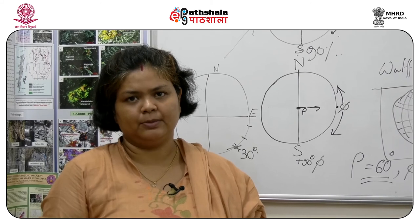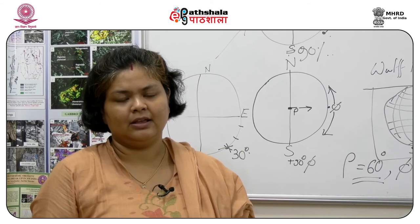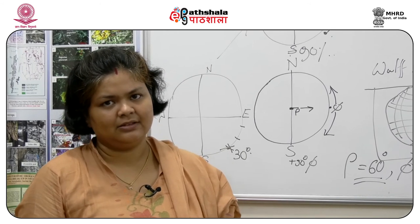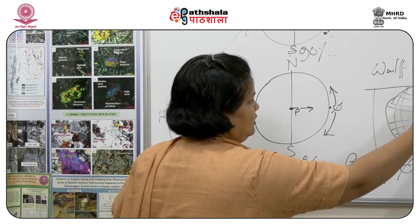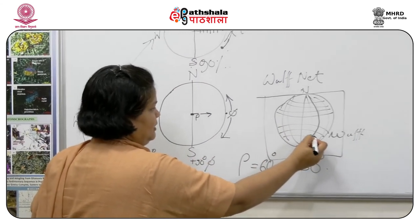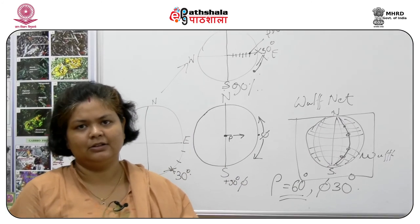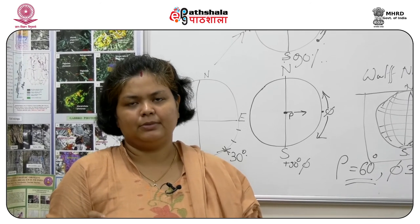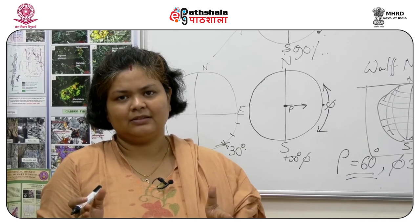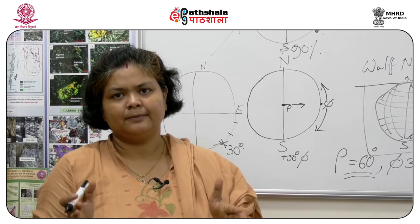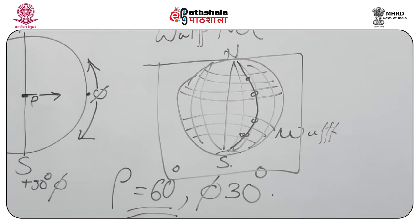Zones can also be plotted on the stereonet. All crystal faces belonging to a zone plot on one great circle — if multiple faces all fall on a single great circle, they belong to the same zone. A zone consists of crystal faces that share parallel edges. This applicability of the stereonet keeps expanding.